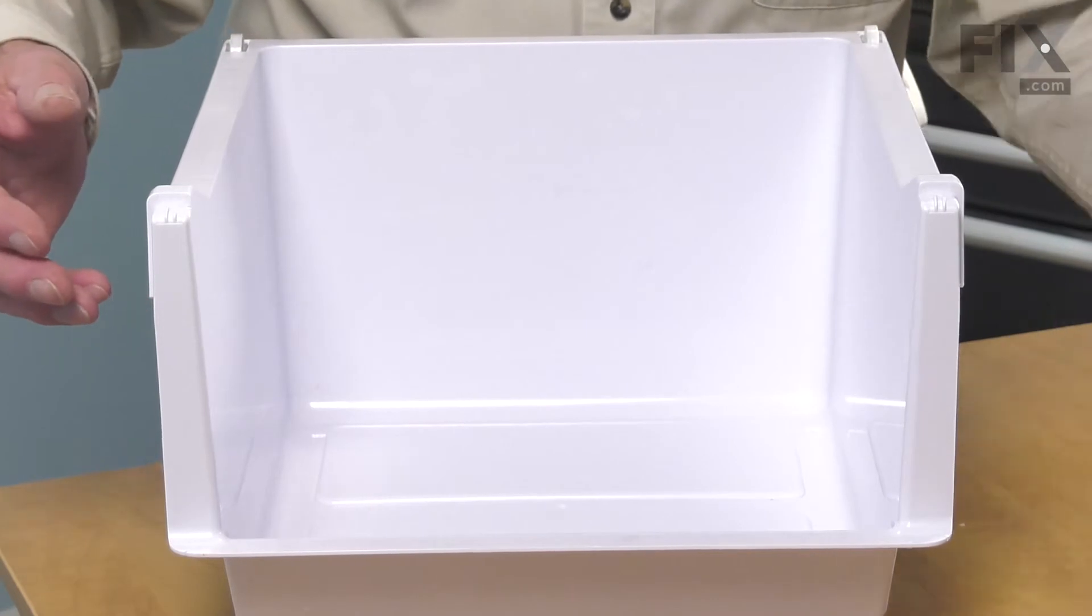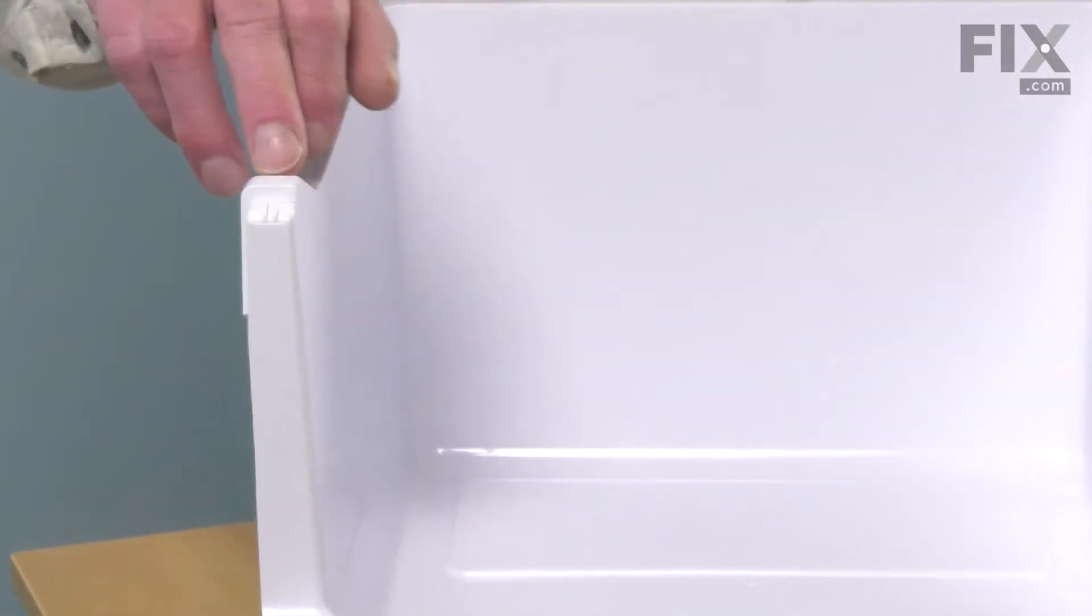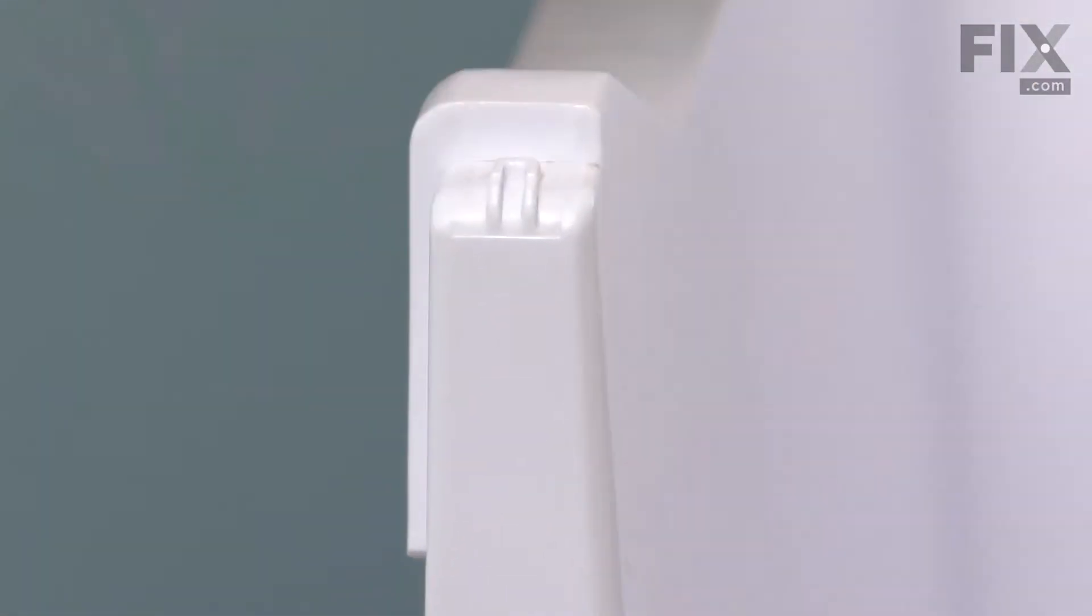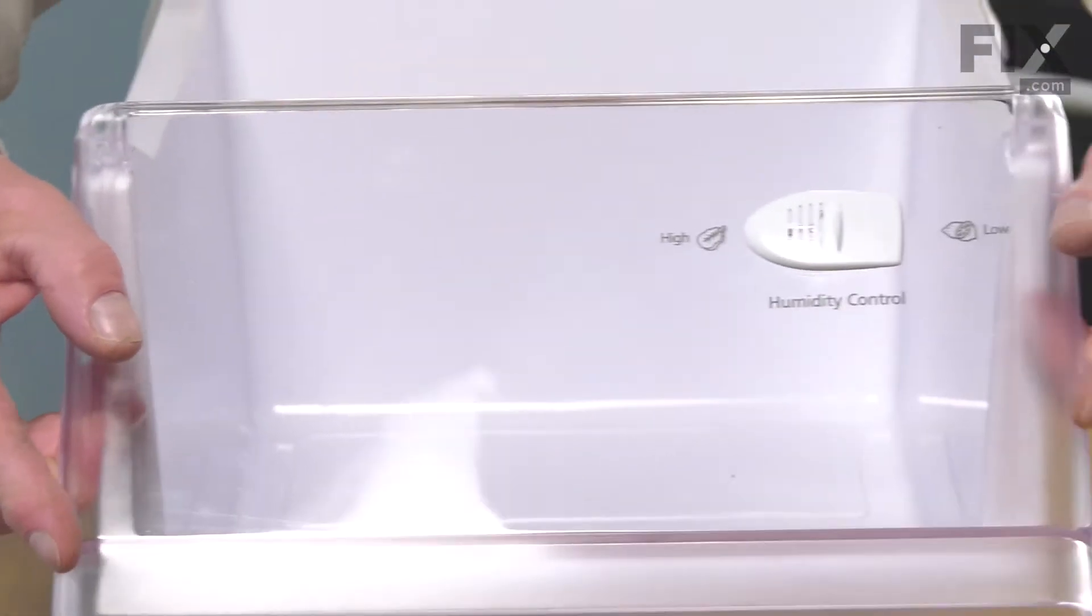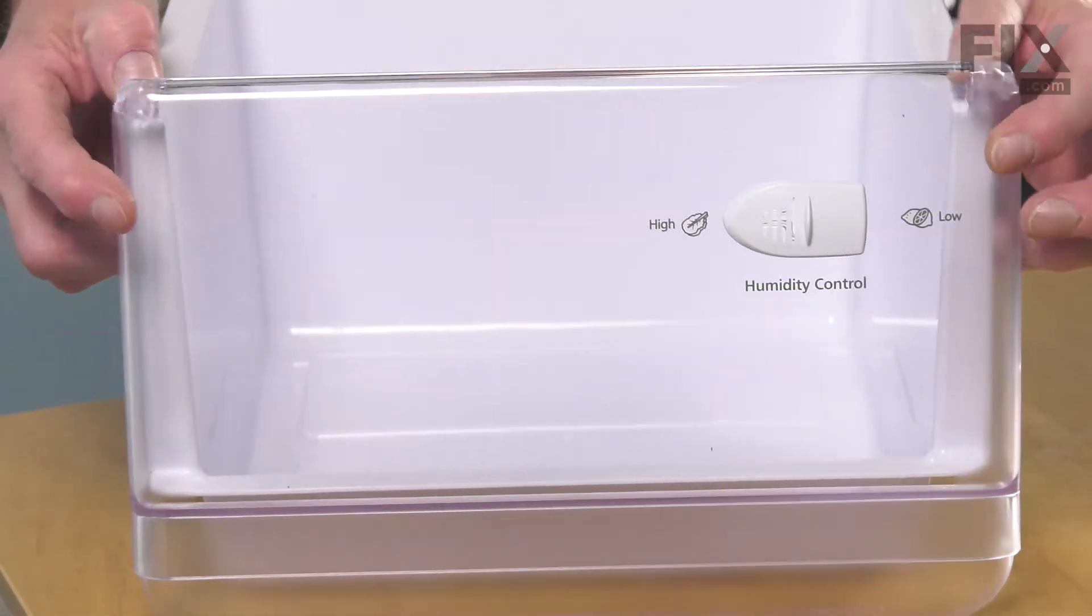Now, to install the new one, we simply need to hook in the top of it first, and we'll want to make sure that we engage these little hooks on the top of the front cover with the two tabs that are built into the body of the crisper. Line it up side to side, make sure those two engage.